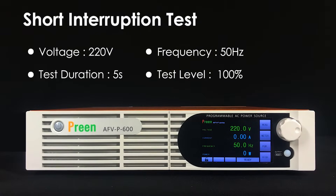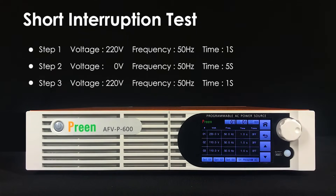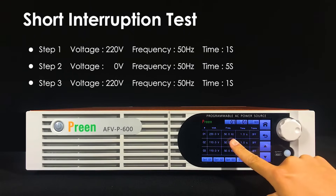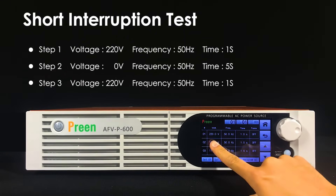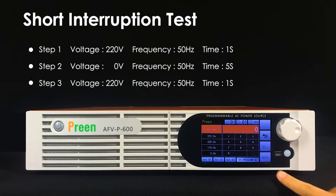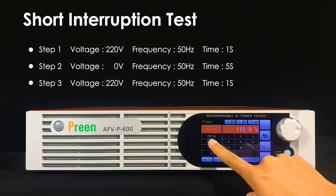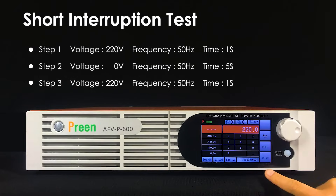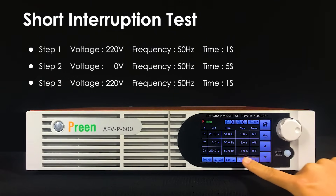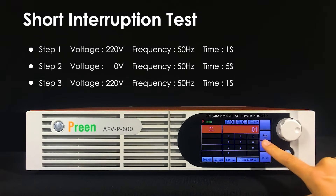For short interruption under nominal 220 volts and 50 hertz, we can use the step feature to simulate. Let's suppose the voltage drops to 0 for 5 seconds. We will set each step's voltage, frequency, and time according to the numbers shown on the video. Verify and set the start and end steps to complete the setting.